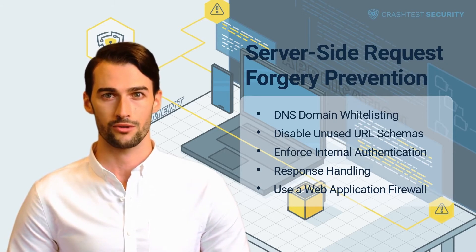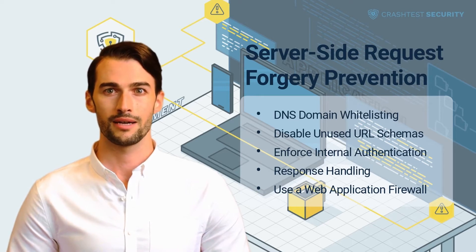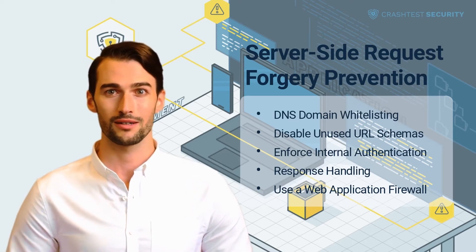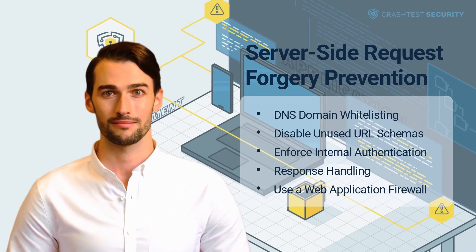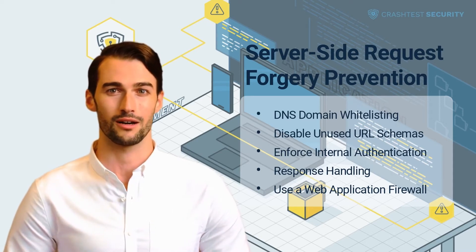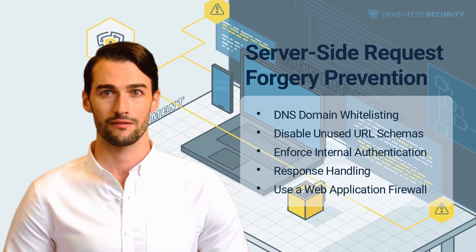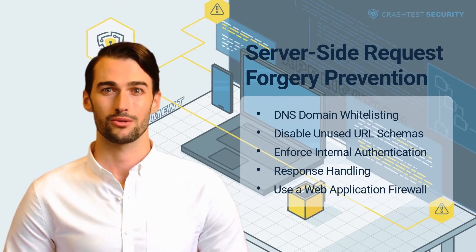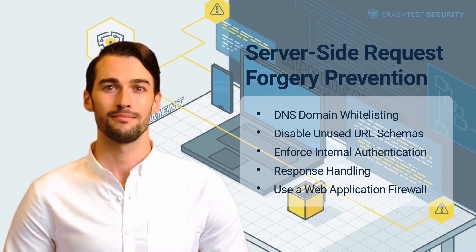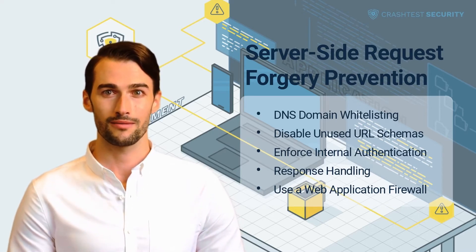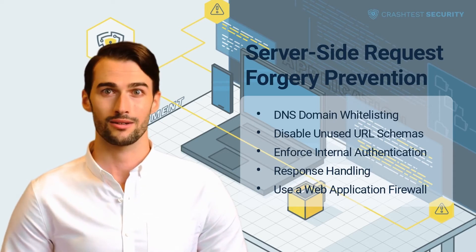Disable unused URL schemas. The application should only allow the schema being used to make requests, while disabling all others. Disabling unused URL schemas is an effective preventive measure against SSRF attacks, as this stops attackers from exploiting URL schemas to craft malicious URLs to access backend resources. Some commonly exploited URL schemas include File, FTP, Dictionary, and Gopher.